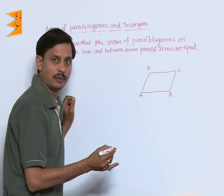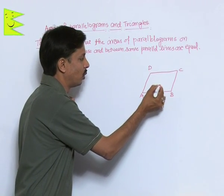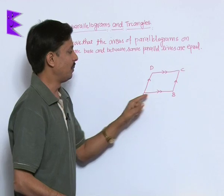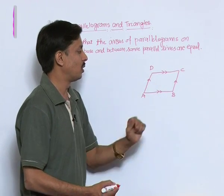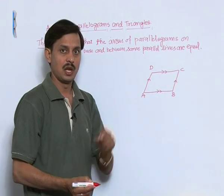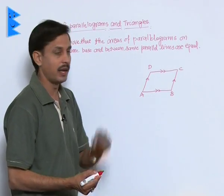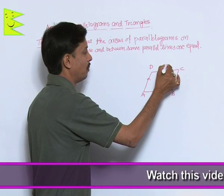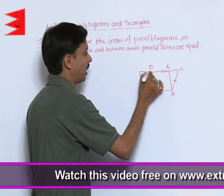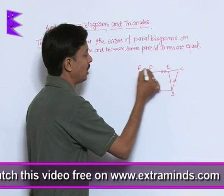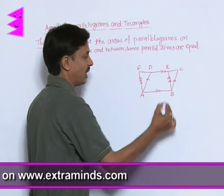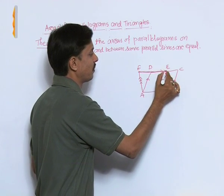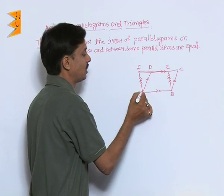ABCD is a parallelogram, so AB is parallel to DC and AD is parallel to BC. On the same base AB, there is another parallelogram named ABEF, where AB is parallel to side FE and side BE is parallel to AF.